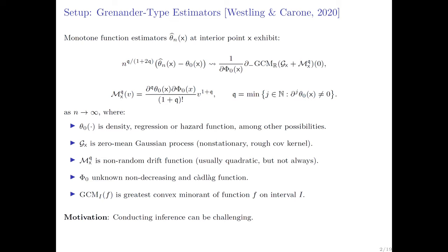At the risk of simplifying that paper too much, the entire paper can be summarized in one slide. They consider a class of monotone function estimators and study the large-sample distributional properties of the appropriately centered and scaled statistic based on those pointwise estimators. The main result is: given a certain scaling that depends on a parameter Q — which controls the rate of convergence of the estimator — after centering, the statistic converges weakly to the left derivative of the greatest convex minorant of a certain Gaussian process. This generalizes several well-known results in the mathematical statistics literature.